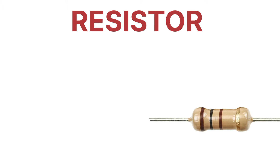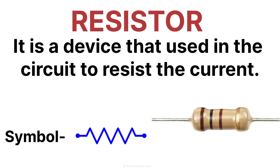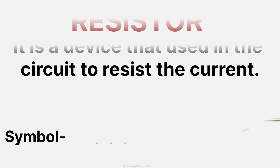First, what is a resistor and what is the symbol for resistor? A resistor is a device which is generally used to oppose the flow of electric current in a circuit. You can see the symbol for resistor in the image.